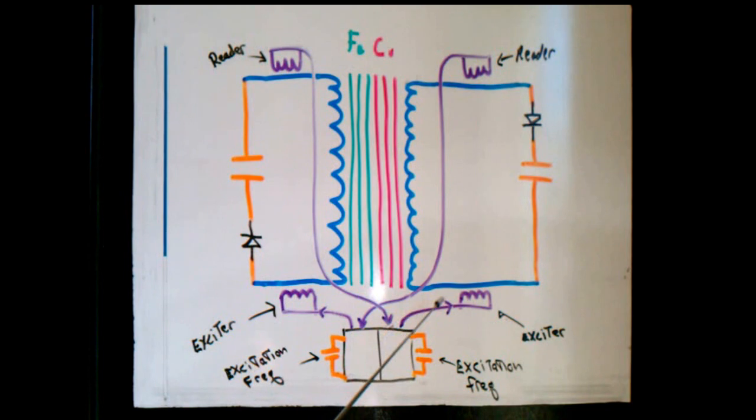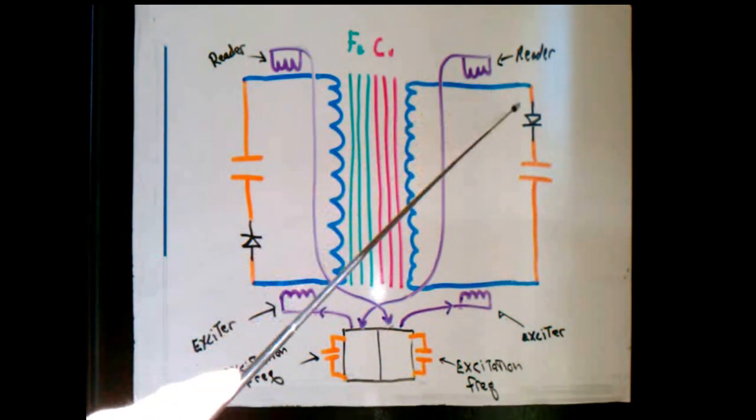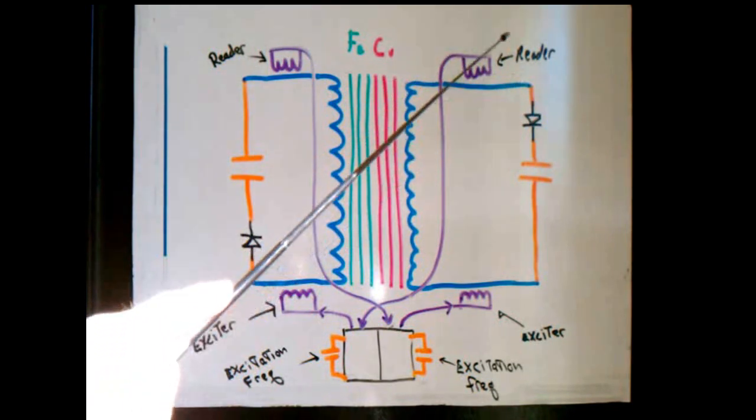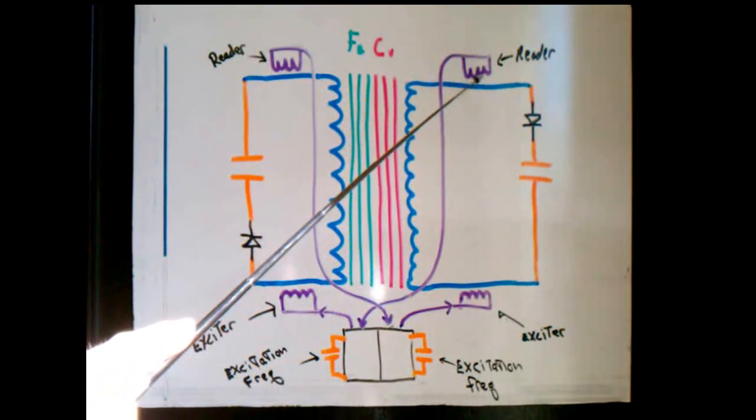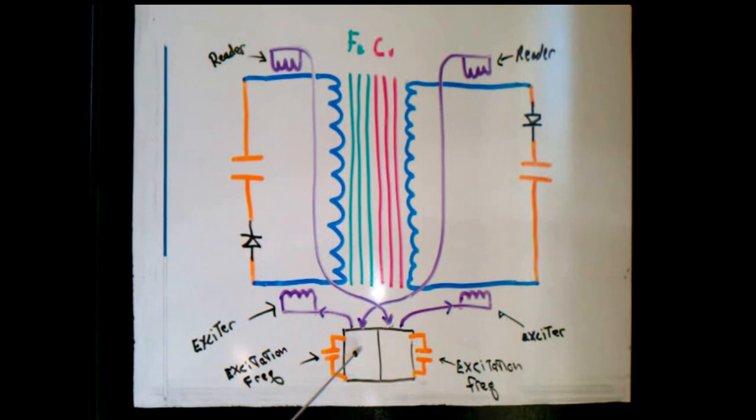The stun gun circuit excites the exciter which causes this tank to ring in one direction. The reader takes it up, cross couples to the other stun gun circuit which fires it off, so these two guys bounce back and forth. The LC time constants of these two tank circuits is matched via the excitation frequency of this capacitor, so you've got this bouncing back and forth.